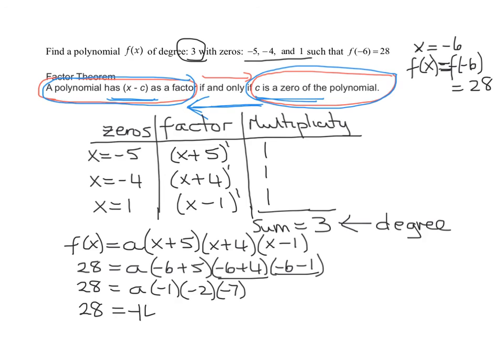So I'm going to get negative 14a. How do I figure out a? Divide both sides by negative 14. So my leading coefficient is negative 2.